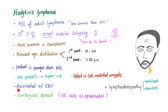Hodgkin's is also associated with Epstein-Barr virus. Non-Hodgkin's is also associated with Epstein-Barr. So Epstein-Barr is associated with both Hodgkin's and non-Hodgkin's, such as Burkitt's lymphoma.